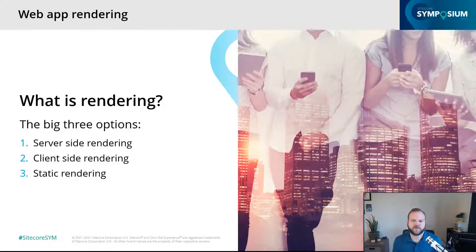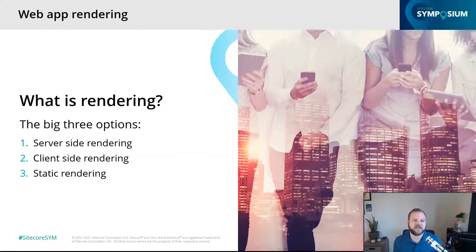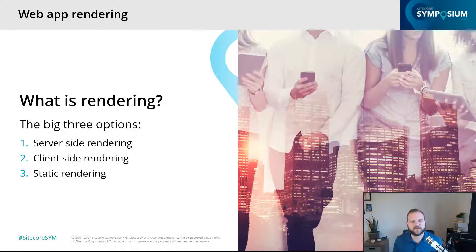So what is rendering? Rendering on the web is the process of transforming website code into interactive pages that our users visit. It usually refers to the HTML, CSS, and JavaScript code that we are rendering to the browser so that the user can have an interactive experience. There are three big options you can use for this: server-side rendering, client-side rendering, and static rendering or static site generation.